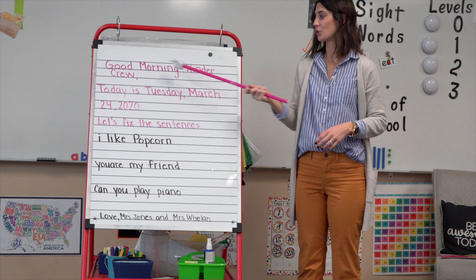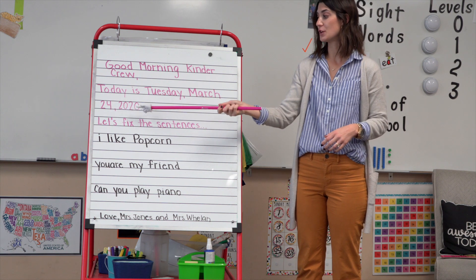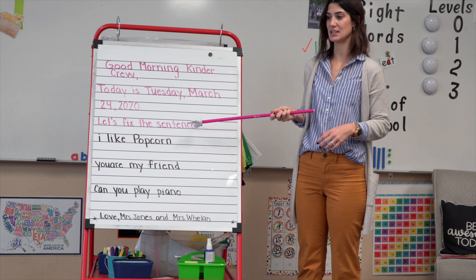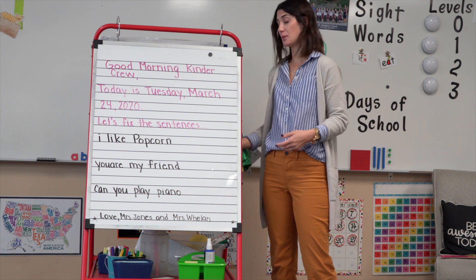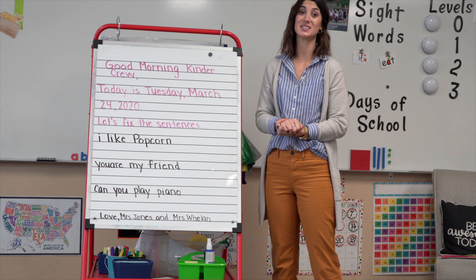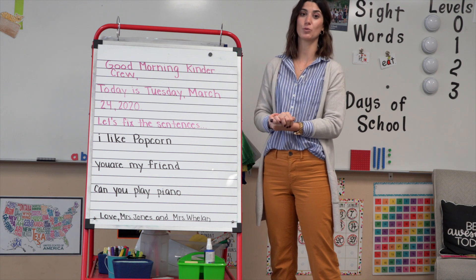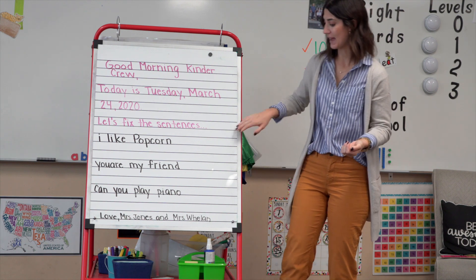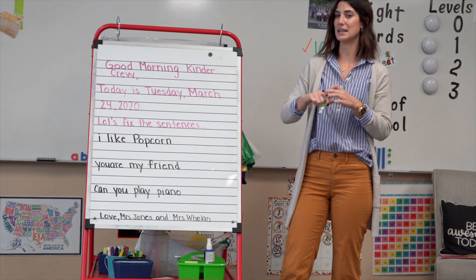Good morning, kinder crew. Today is Tuesday, March 24, 2020. Let's fix the sentences. There's something wrong — or multiple things wrong — in each of these sentences. This is going to be important to remember as we continue with our writing unit, because today we're going to be starting to write our sentences in our books.